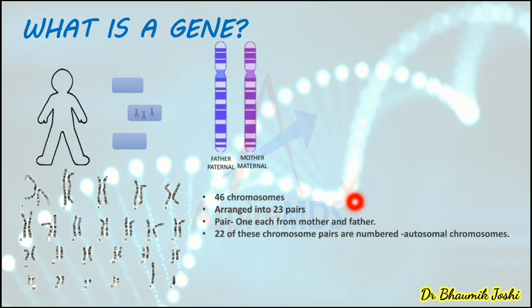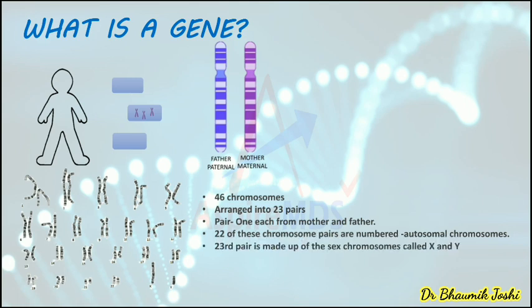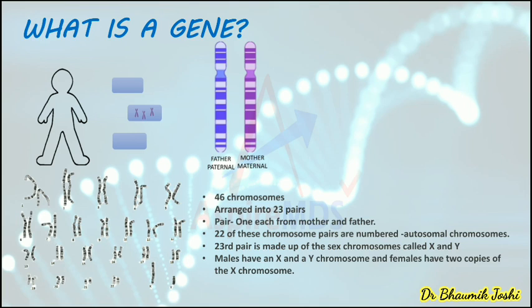Of these 46 chromosomes, or 23 pairs, 22 of the chromosomes are numbered — 1, 2, 3, 4, 5 up to 22. These are the autosomal chromosomes. The 23rd pair is made up of sex chromosomes, called X and Y. Males have X and Y (XY), whereas females have two copies of the X chromosome and do not have the Y chromosome.